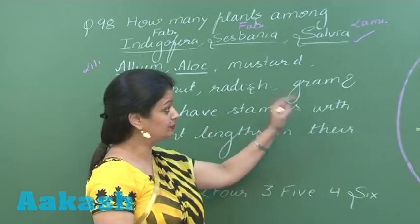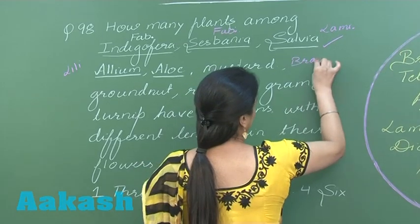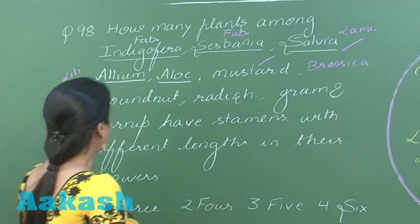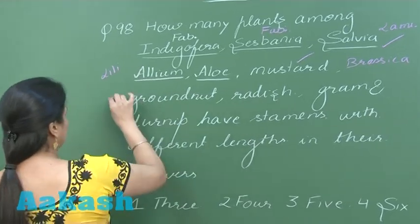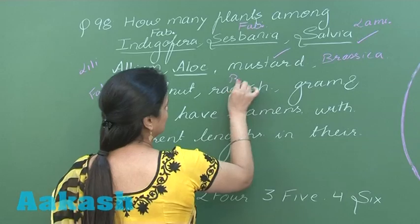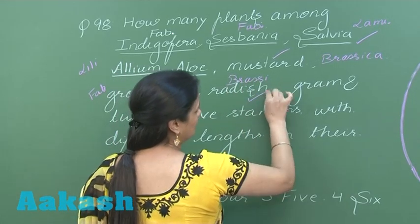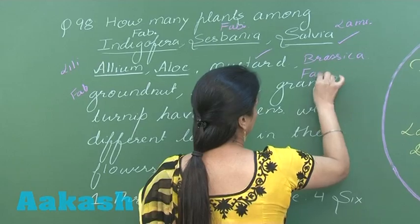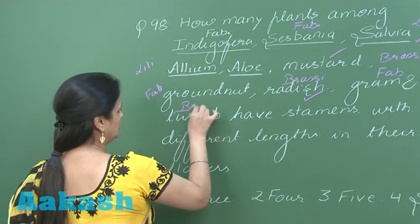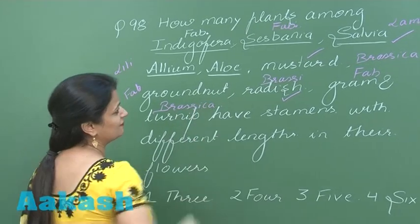Mustard belongs to the Brassicaceae family, so it has different lengths of stamens. Groundnut is again Fabaceae. Radish belongs to the Brassicaceae family. Gram belongs to Fabaceae, and Turnip is also a member of the Brassicaceae family.